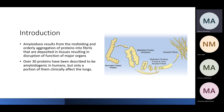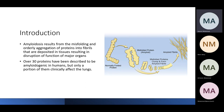In general, amyloid starts as a misfolding of protein, and this protein is then deposited in one of the organs, leading to malfunction of that organ — whether the lung, liver, or another organ in the body. There are a lot of proteins responsible for amyloidosis, about 30 in total, but only a few of them can affect the lung.